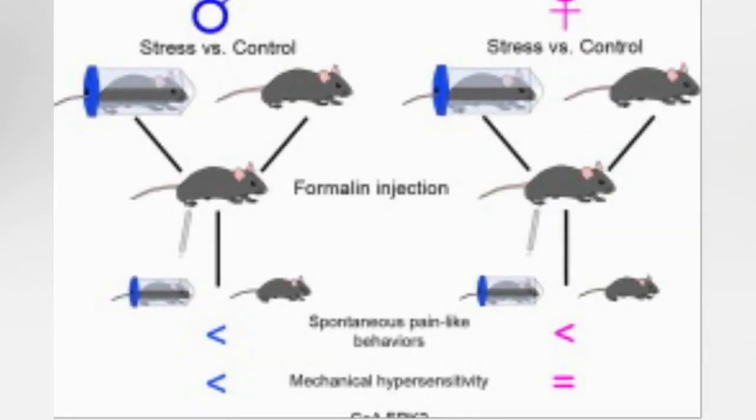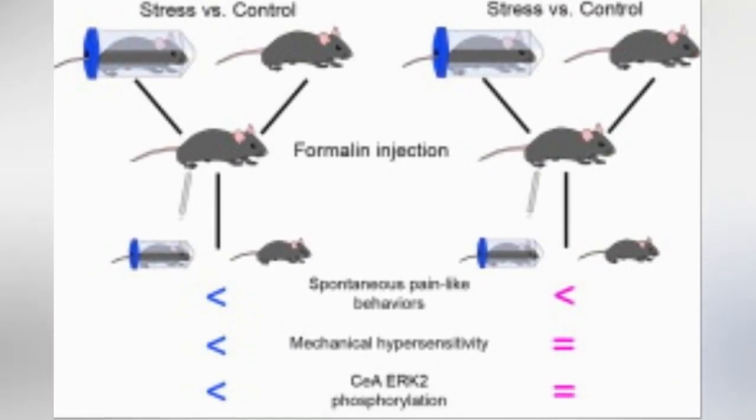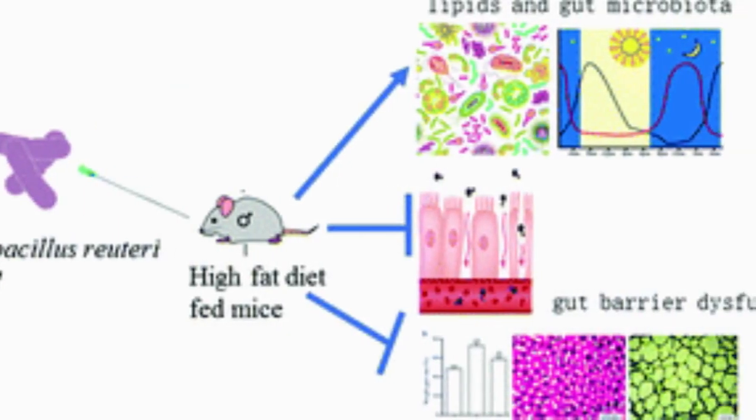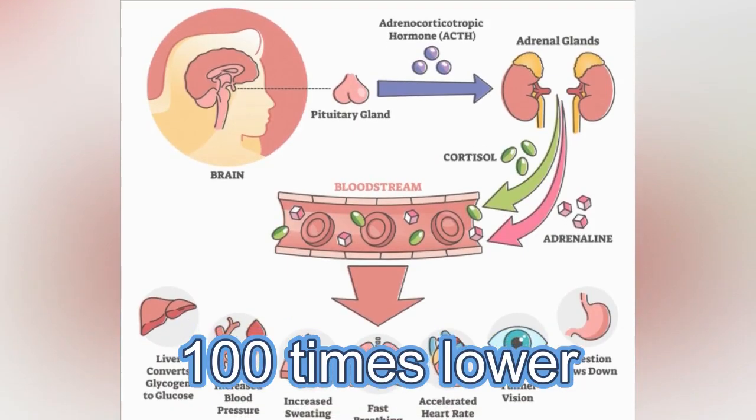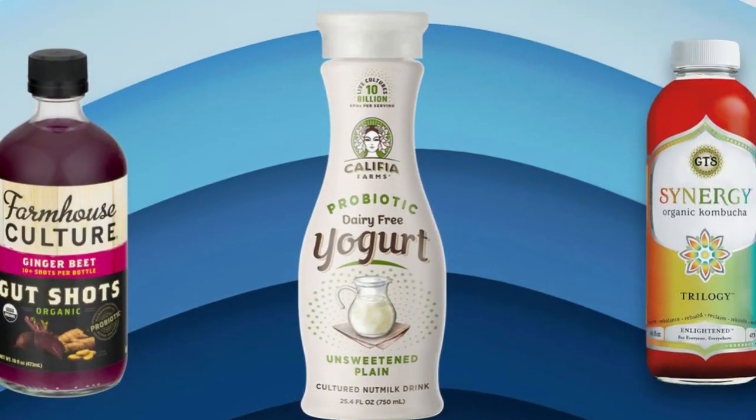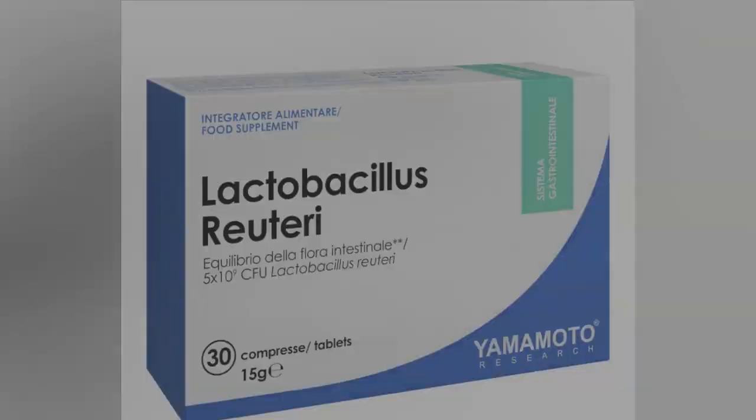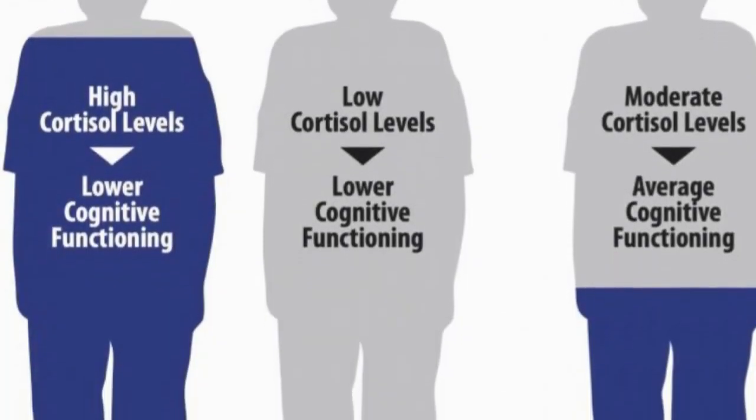He then tested the levels of the stress hormone cortisol in both groups. Turns out the mice with the L. reuteri in their systems had cortisol levels 100 times lower than those without the probiotic. That's a pretty clear result. L. reuteri has a direct impact on cortisol levels.